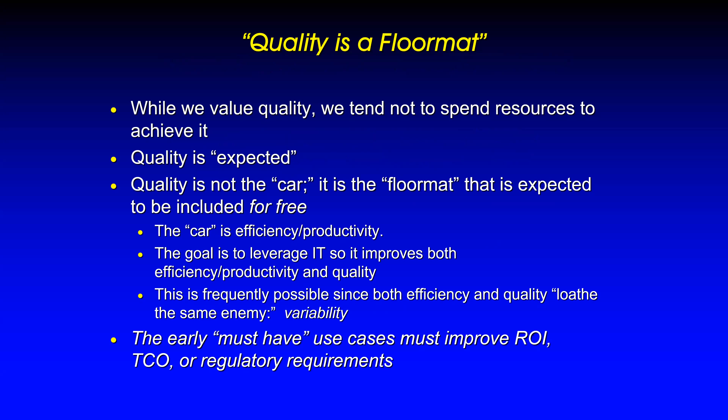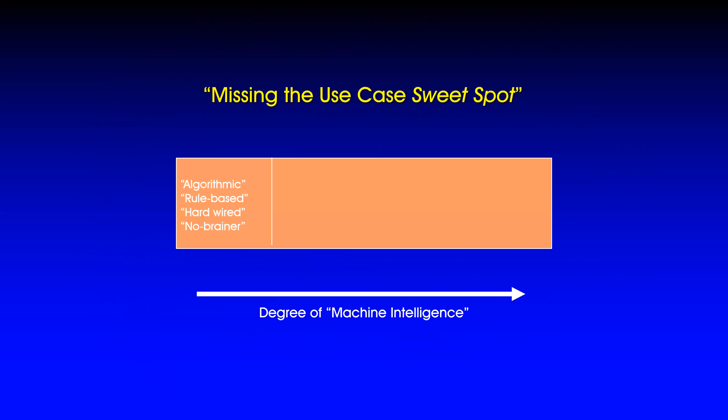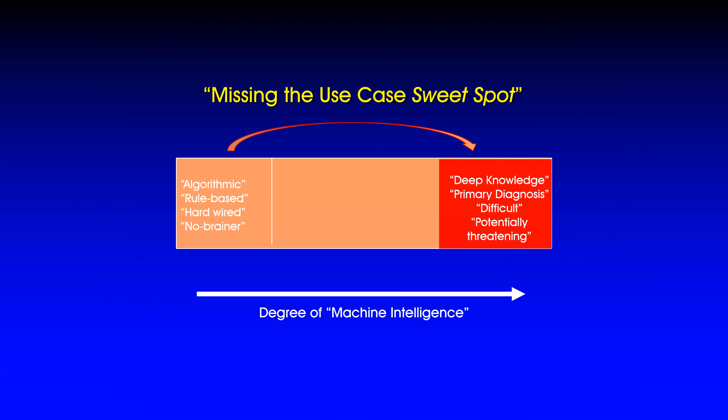A lot of use cases like detecting nodules or reducing error are, at least now, nice-to-haves. When it comes to the C-suite, quality is a given — it's a floor mat. You don't buy a car for the floor mat. The car is efficiency and productivity. The goal is to pick machine learning use cases that improve efficiency, and you'll also improve quality because efficiency and quality share the same enemy: variability. The early must-have use cases have to improve return on investment, total cost of ownership, or regulatory requirements — they have to address improved efficiency and productivity.